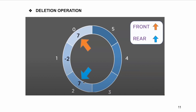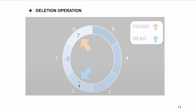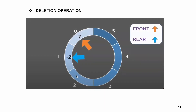For deletion using the rear pointer, we simply decrement its location. From position two it comes to one, and that memory is cleared — the node is deleted. So for deletion from the rear, the rear pointer has to be decremented. That was all about the deletion operation.